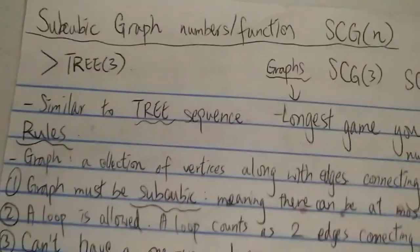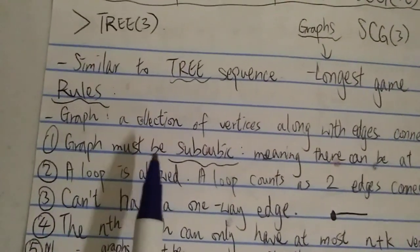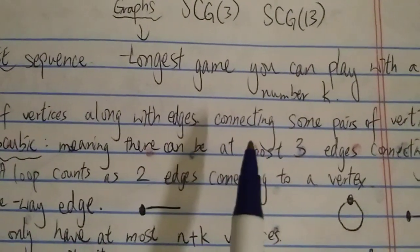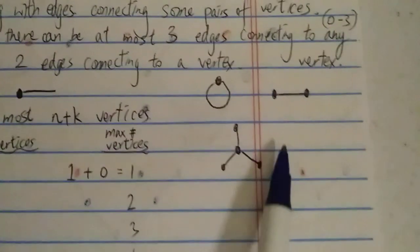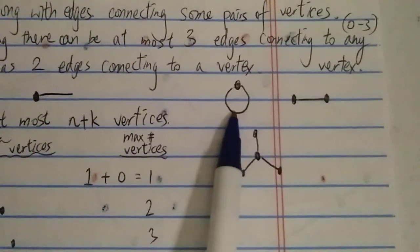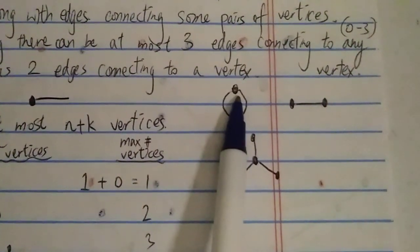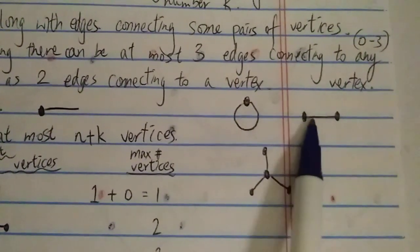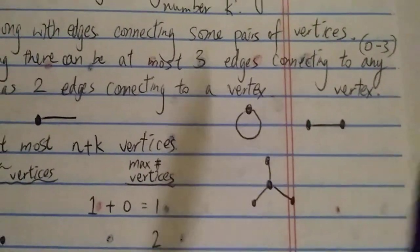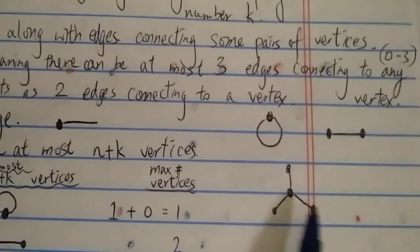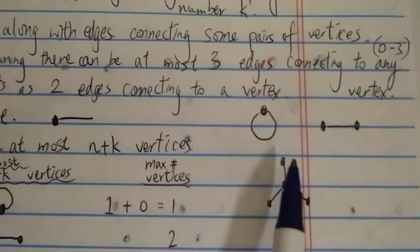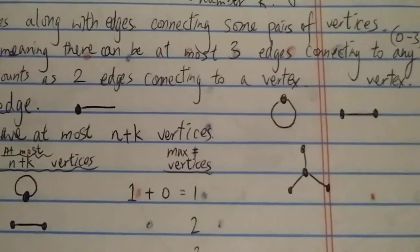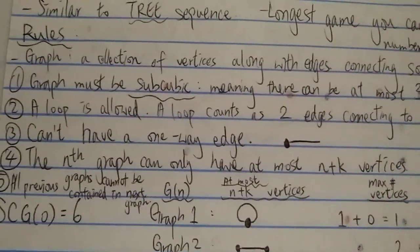So what is a graph? A graph is basically a collection of vertices along with edges connecting some pairs of vertices. Here are some examples: a single dot is a vertex; this is a loop; and here we have two vertices connected with an edge. A third example has four vertices with an edge connecting to the middle one. This is what we call a graph — it is not the same as trees.